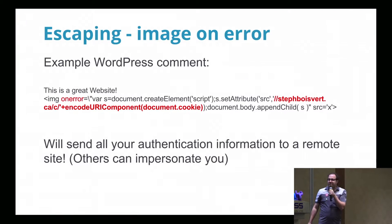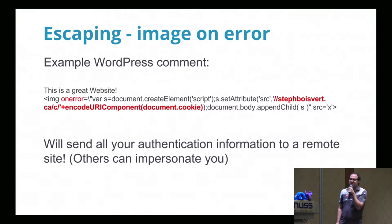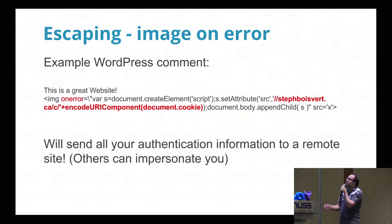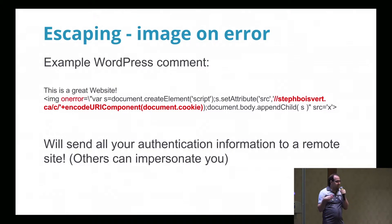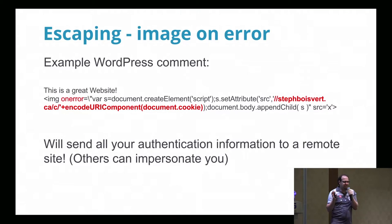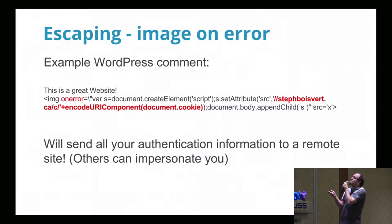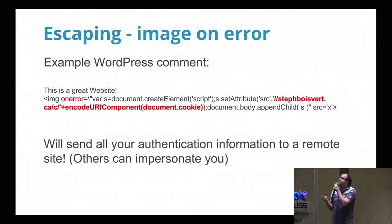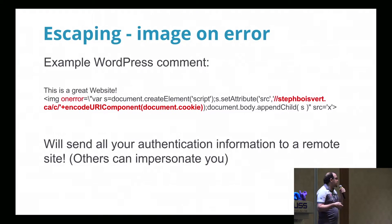Something that's been really popular recently is using the image onerror. So let's say someone posts a comment on your website and you let them put images — you strip_tags all the nasty stuff but leave images in. Someone can just put an onerror attribute in the image tag, and that's going to run automatically because the source throws an error. So it's going to send all your information to a remote server.